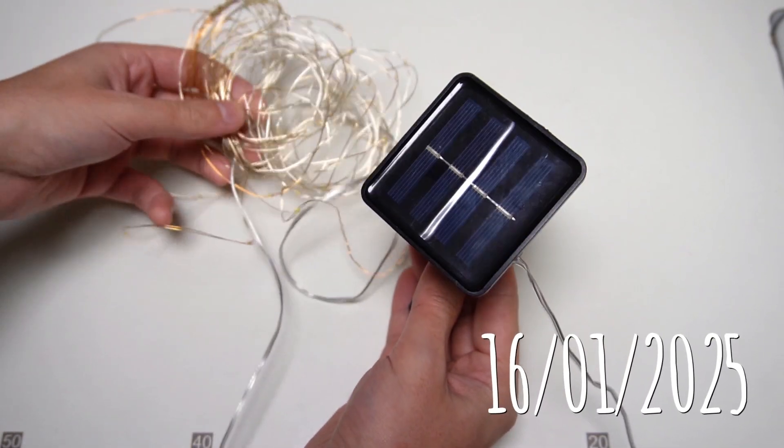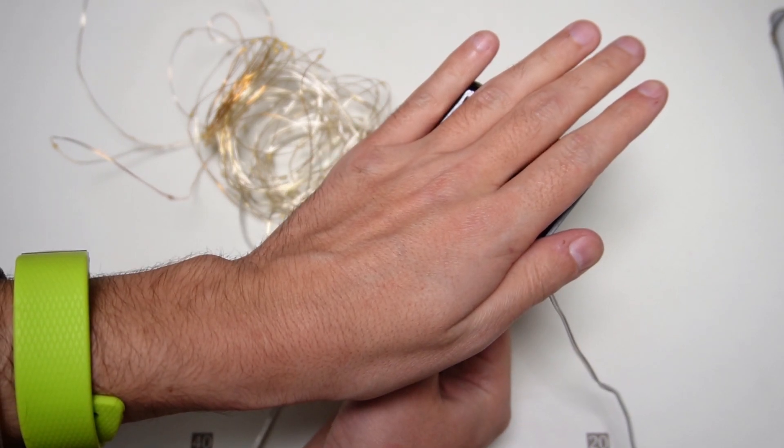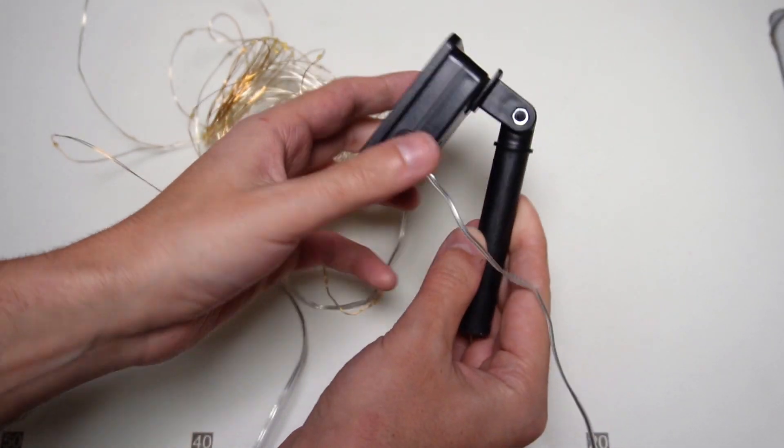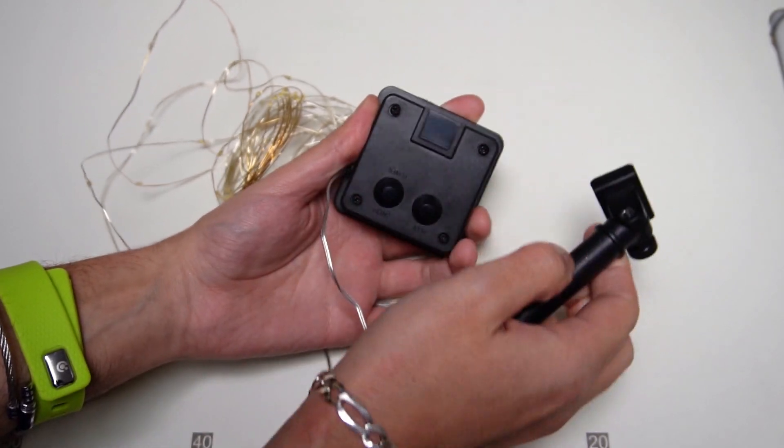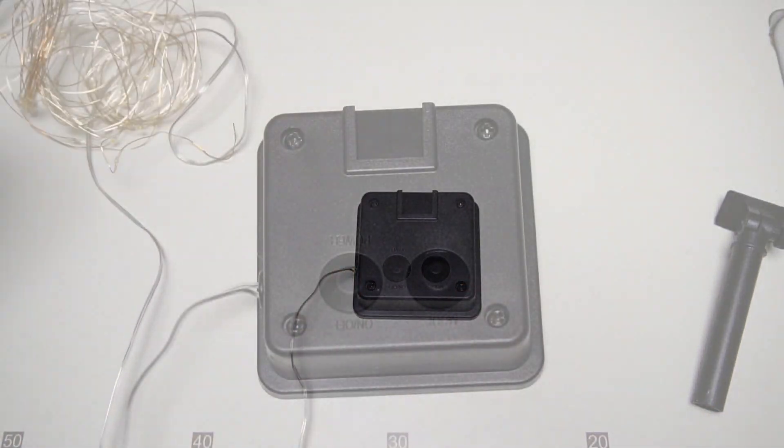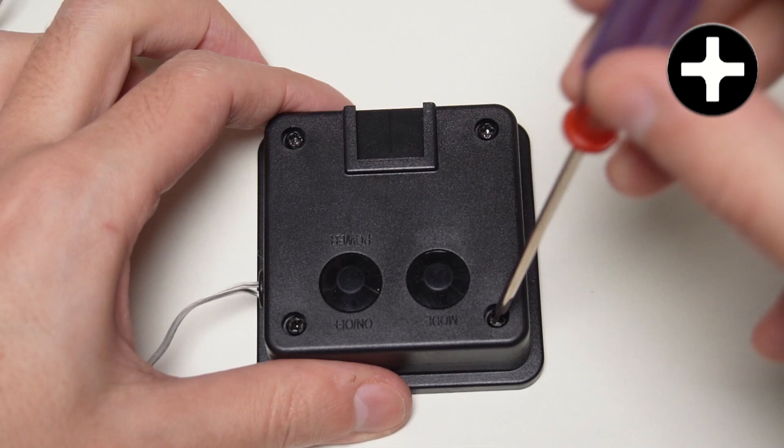Unfortunately after 2 years of use the lights stopped working so today I am going to fix them. At first I have to remove the plastic pole. There are 4 screws on the back that I need to remove.